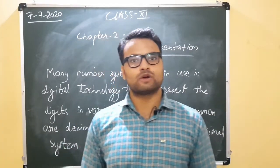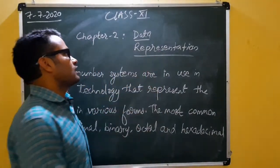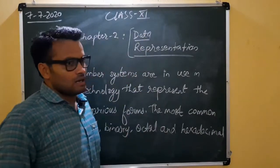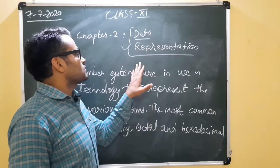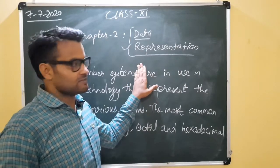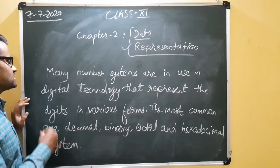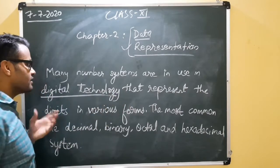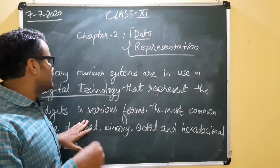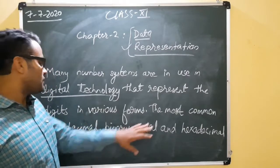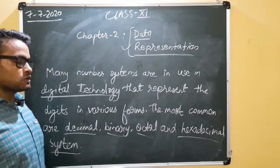Hello, I am Vikas Misra. In today's class we are going to learn about data representation for class 11. We will learn about the different types of data representation used in computers. Many number systems are in use in digital technologies. Inside computers or mobile phones there are different types of data representation. The most common are decimal, binary, octal, and hexadecimal systems.